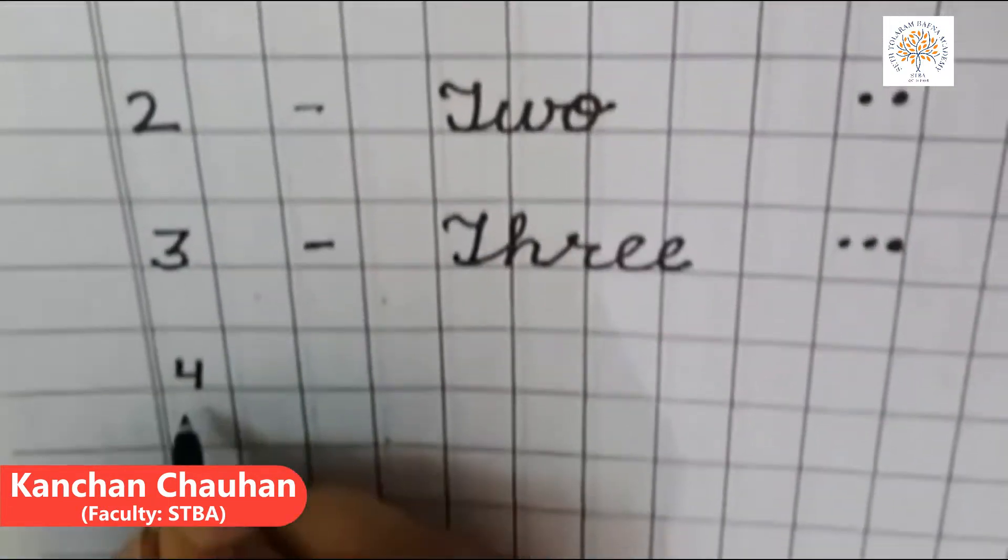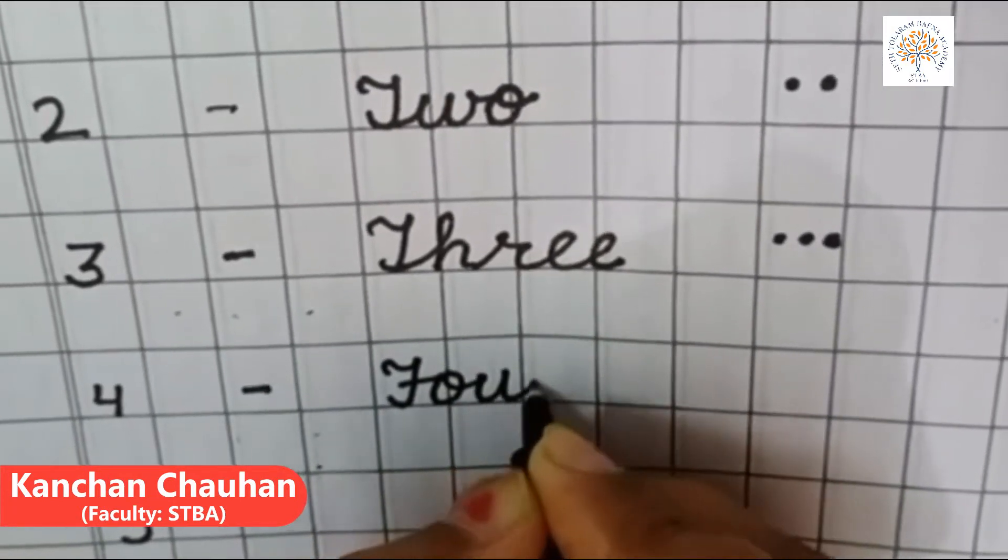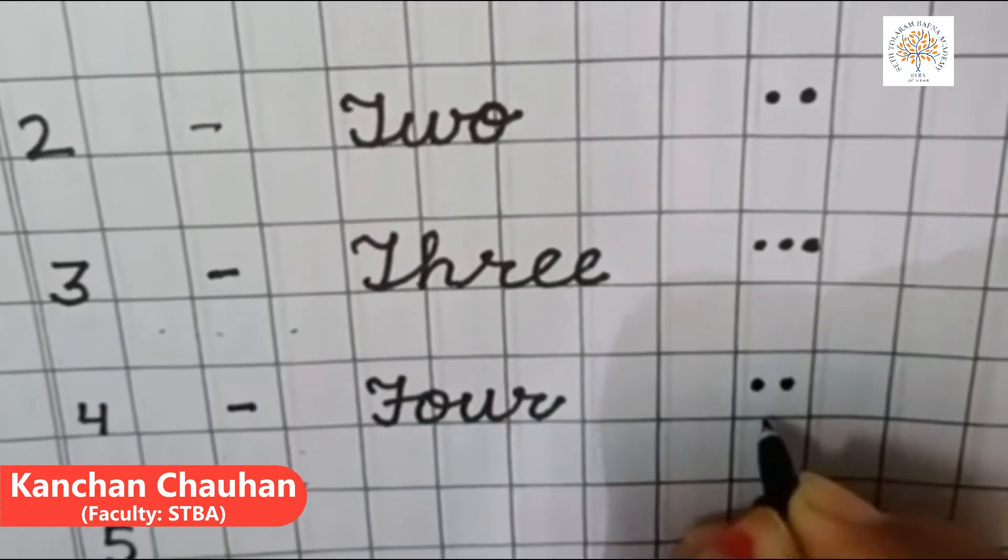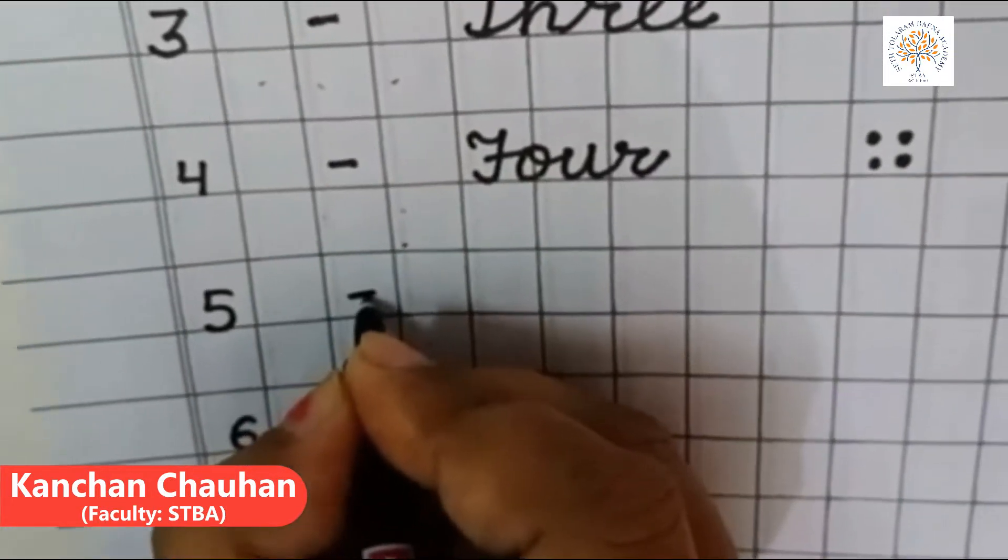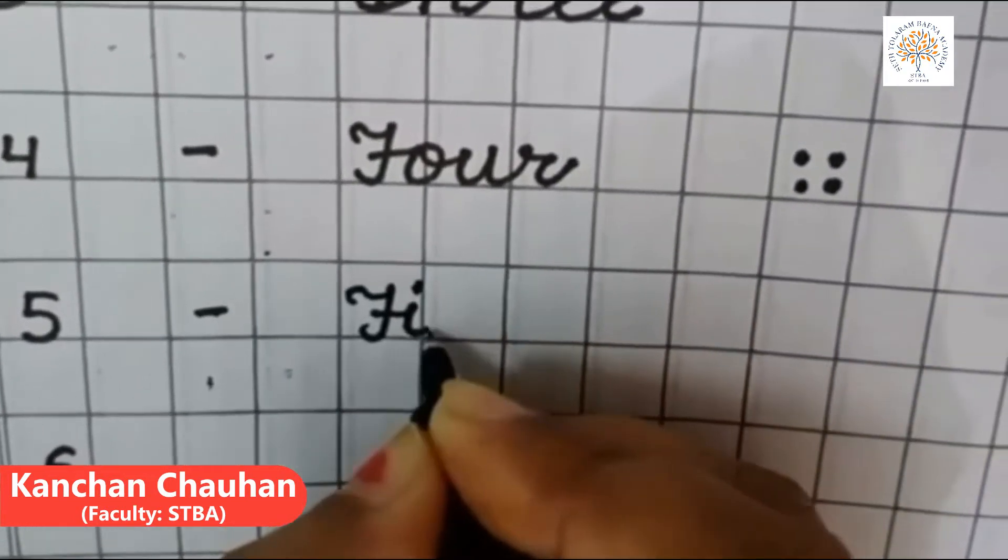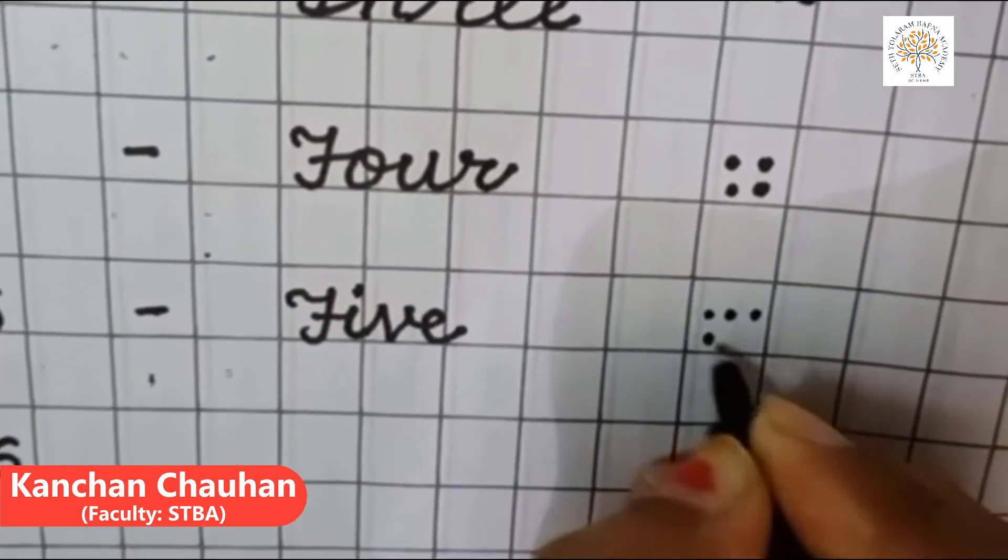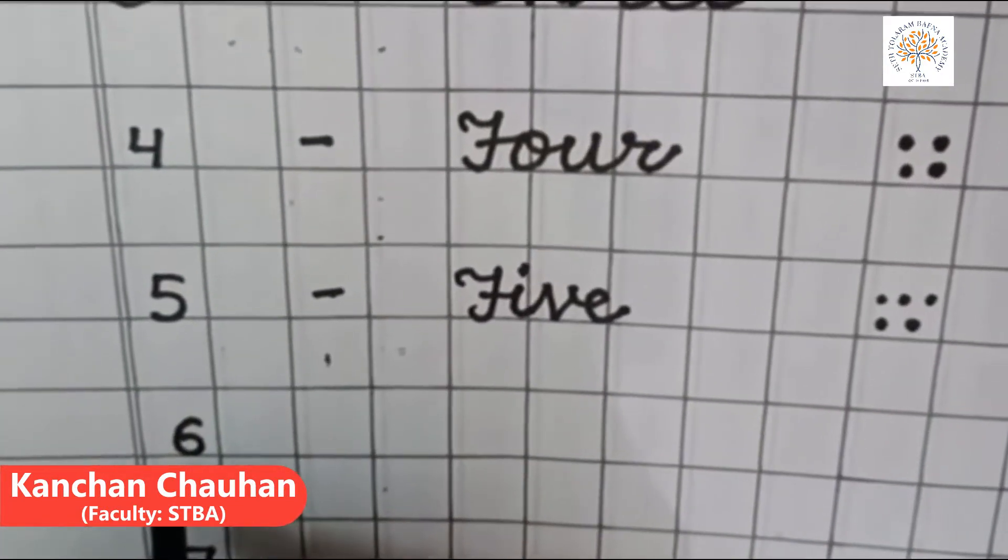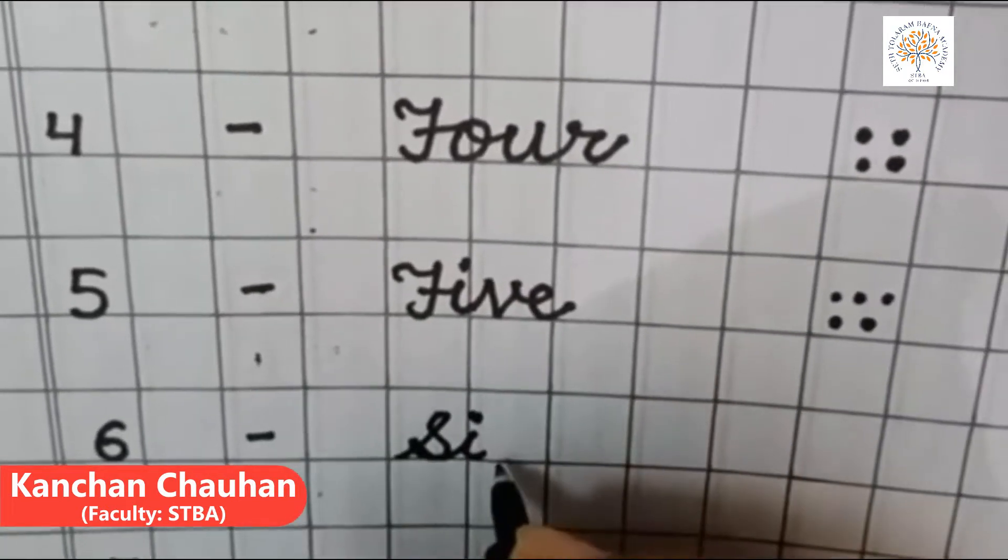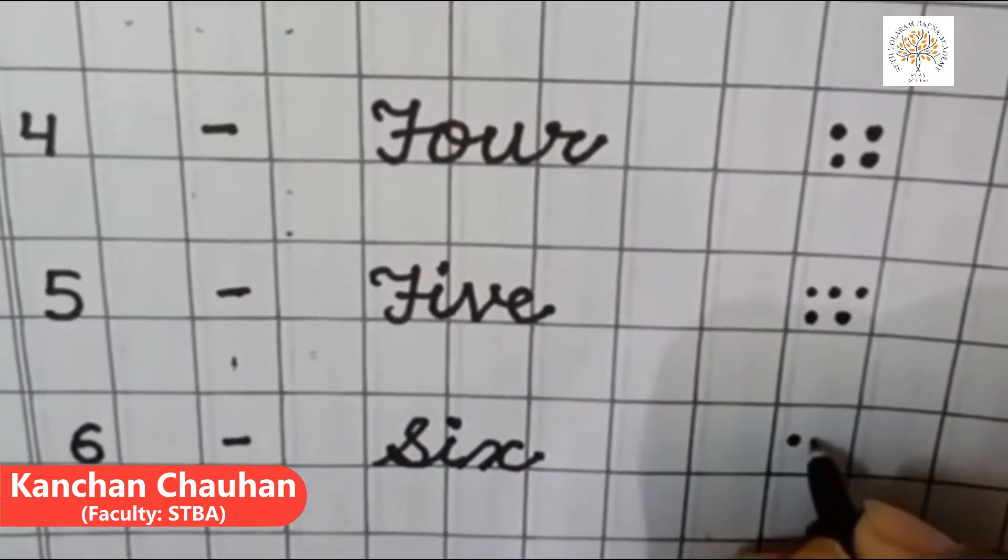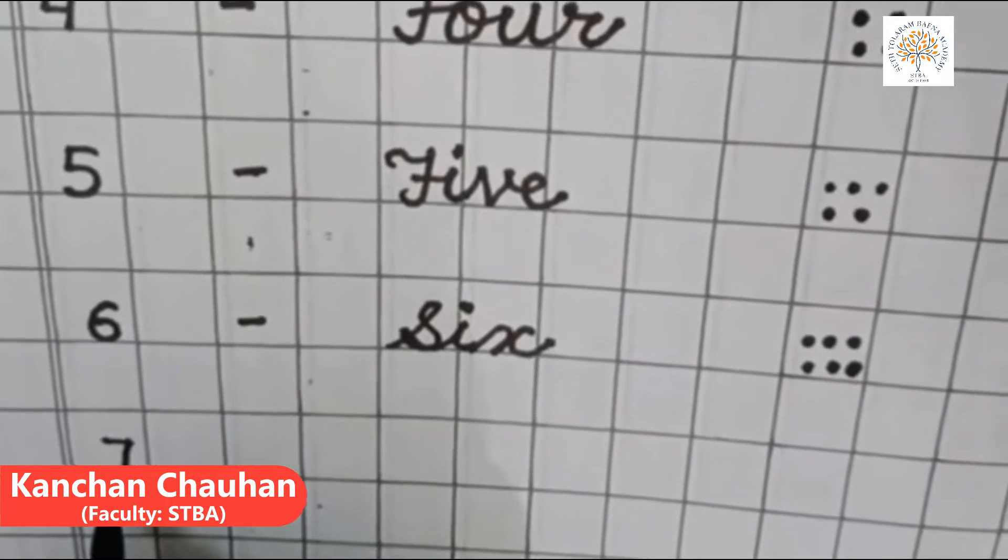This is numeral 4 and number name is F-O-U-R-4. This is numeral 5 and number name is F-I-V-E-5. Numeral 6 and number name is S-I-X-6.